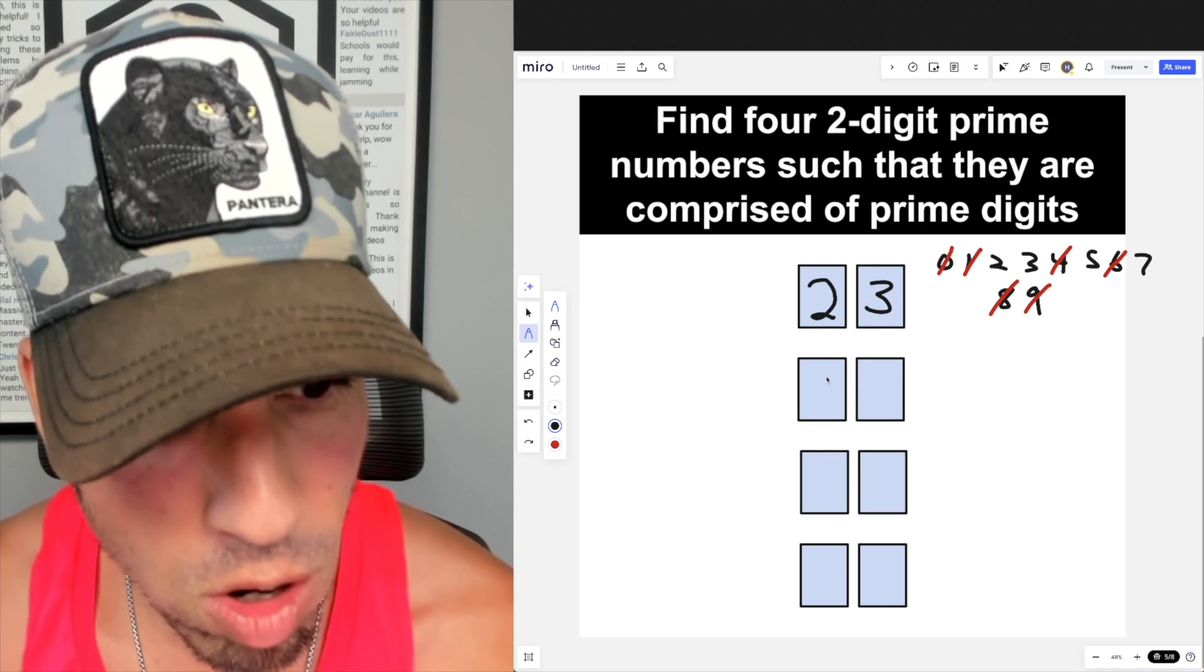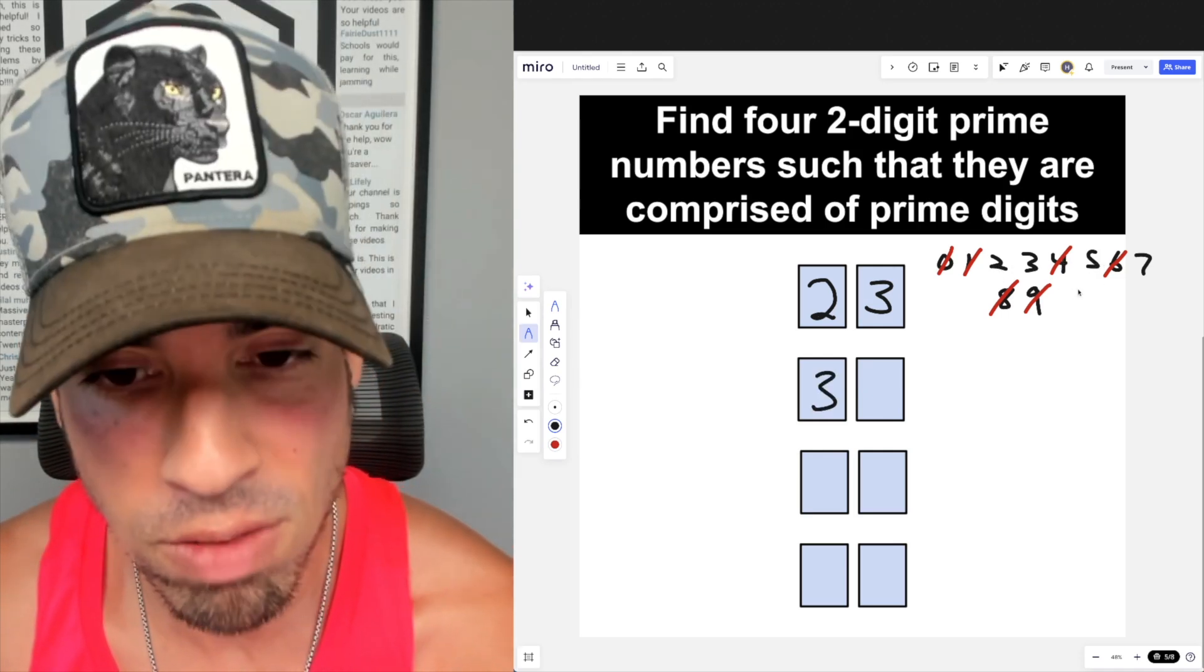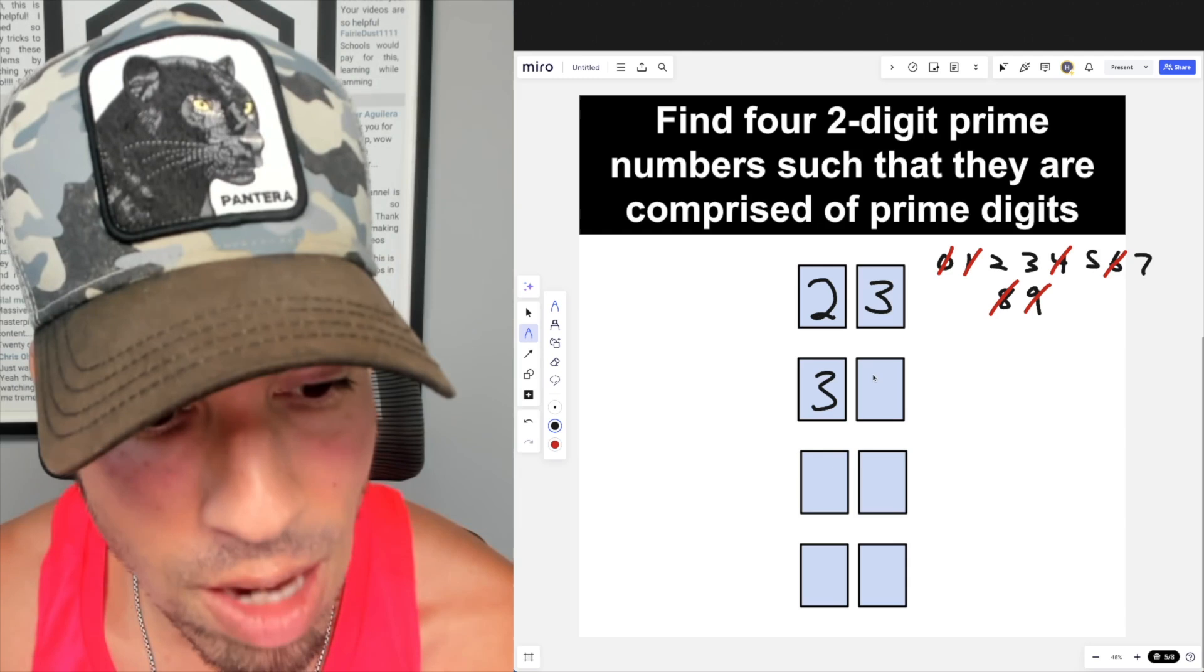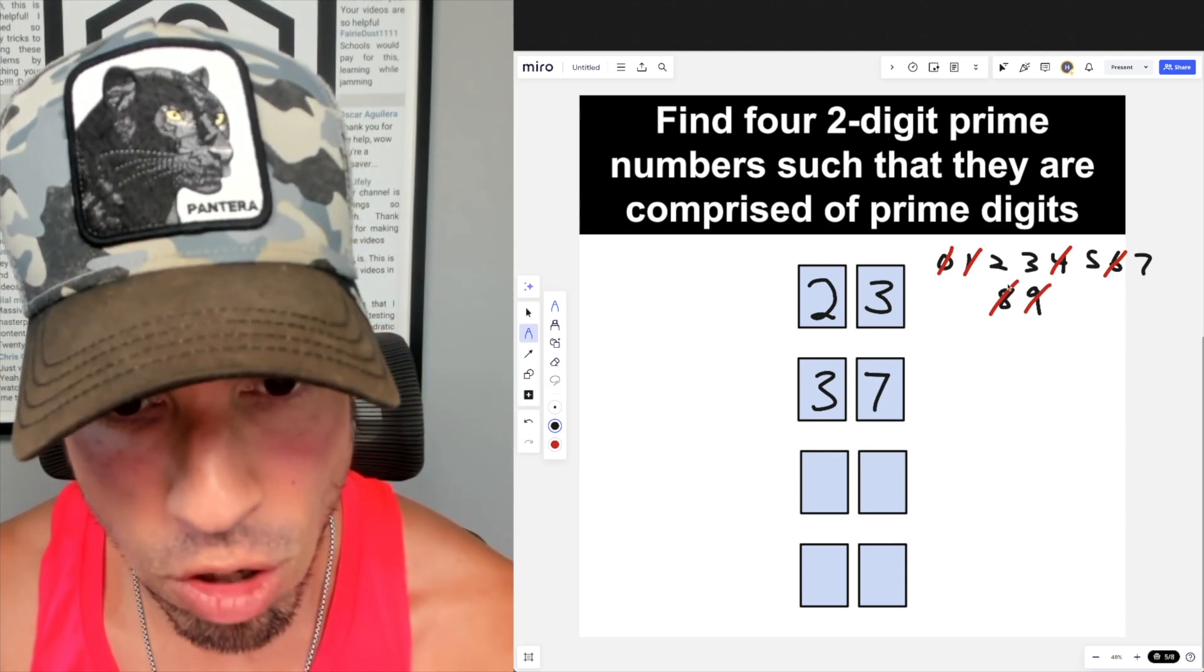Now let's move along to the thirties. If we have 32, that doesn't work. 35 is divisible by five, but 37 does work. That is a prime number, and obviously both of these digits are prime. So that's all we got for three.